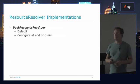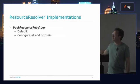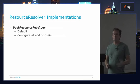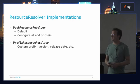The out-of-the-box implementations — there are four right now. There's a PathResourceResolver, which is the default, configured by default if you don't set anything. And it should always be configured at the end of the chain.